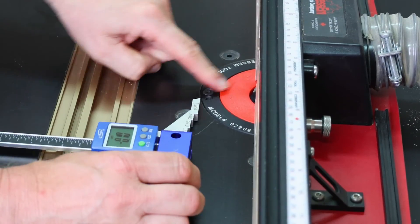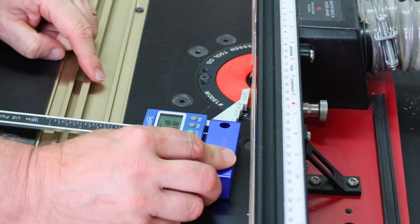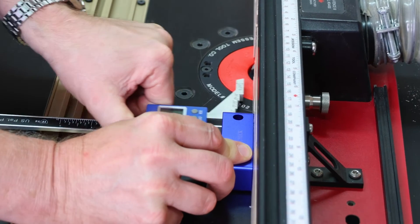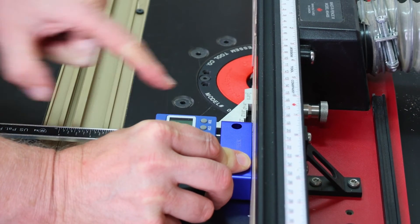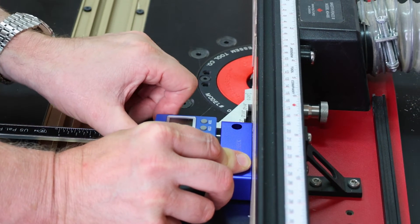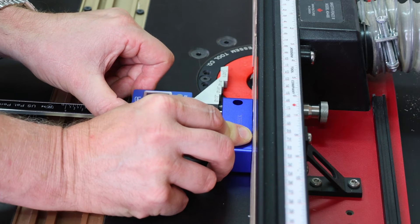So if I wanted to see how far this cutter is out from the fence, bring the EZ-Check to the fence, bring it back to a zero position, put it over the cutter.